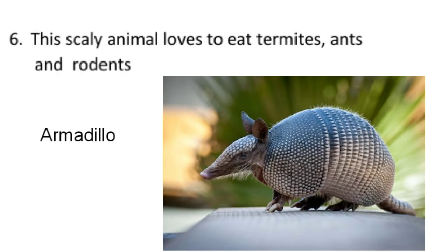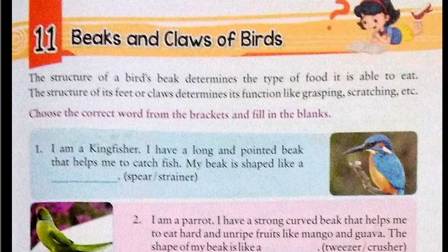So now we have completed our exercise number 10. Now we will do our exercise number 11, that is beaks and claws of birds. The structure of a bird's beak determines the type of food it is able to eat, and the structure of its feet or claws determines its function like grasping, scratching, etc. Here we have been given the description of the beak and claws of a bird, and we have to answer according to that description.